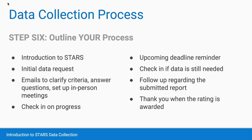Now that we've covered some of the most common data collection best practices and examples, you will need to determine what process works best for you. You'll want to obtain executive level support, determine who's on your team and what data entry model you'll use. You'll need to get familiar with the STARS technical manual and decide which credits to pursue. You'll want to map out those data contacts and start thinking about your reporting time frames. And then you'll need to maintain frequent communication with your data providers. Here are some examples of emails you might want to send: an introductory email, an initial data request, several back and forth emails to clarify criteria and answer questions and possibly to set up meetings, a check-in on progress and an upcoming deadline reminder, followed by an additional check-in if data is still needed after the deadline has passed.